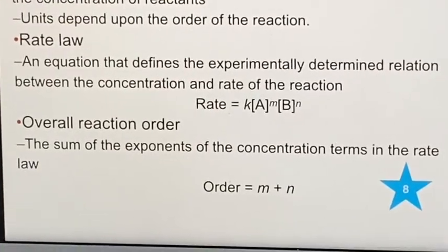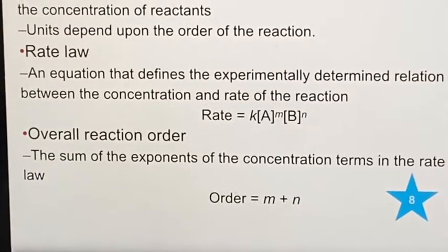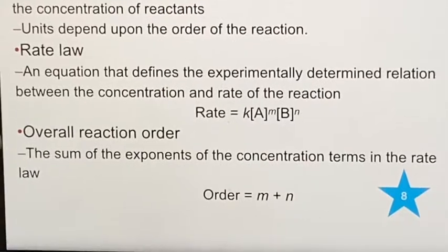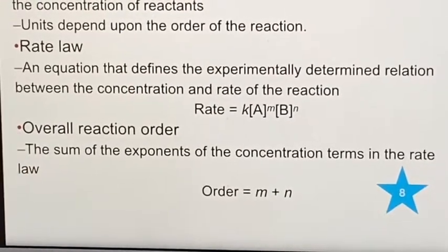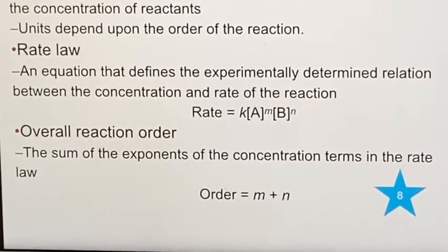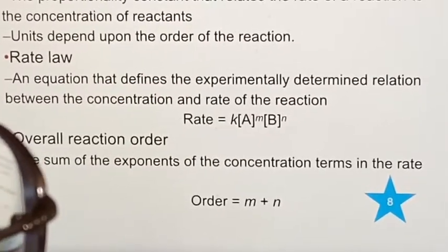An overall equation just tells us what we started with and what we ended with. The normal chemical equation tells us about the substances being consumed and the ones being produced.